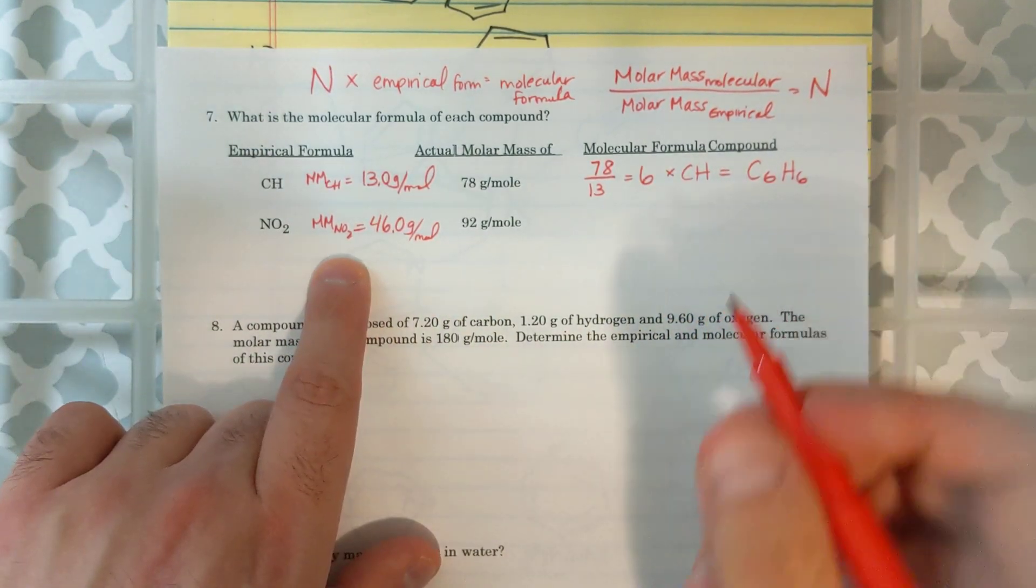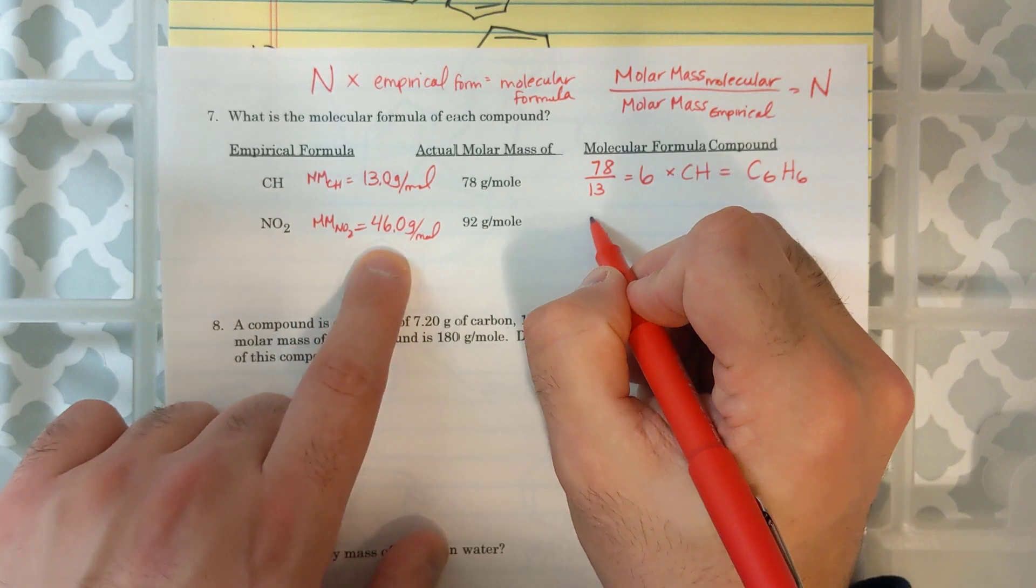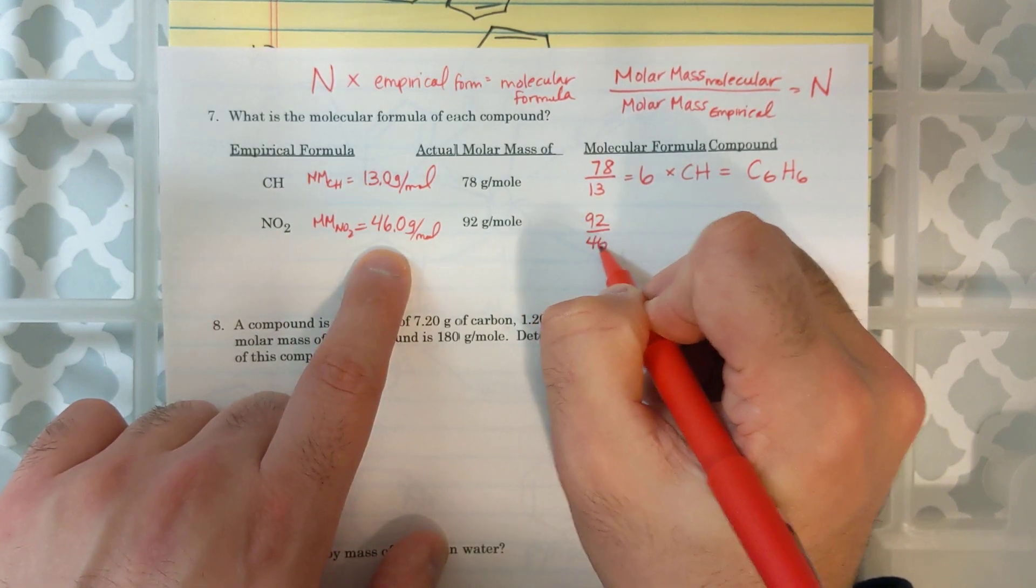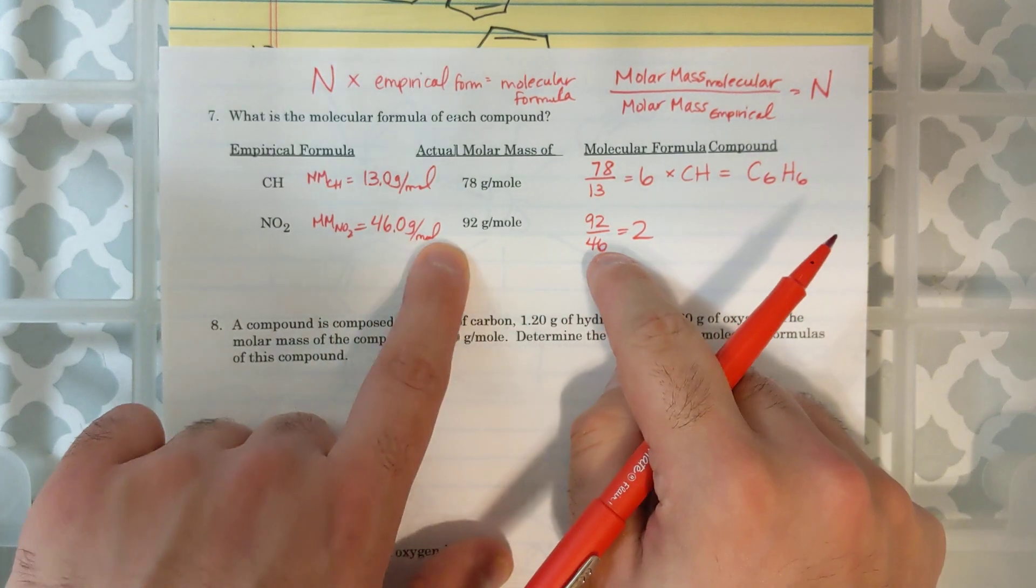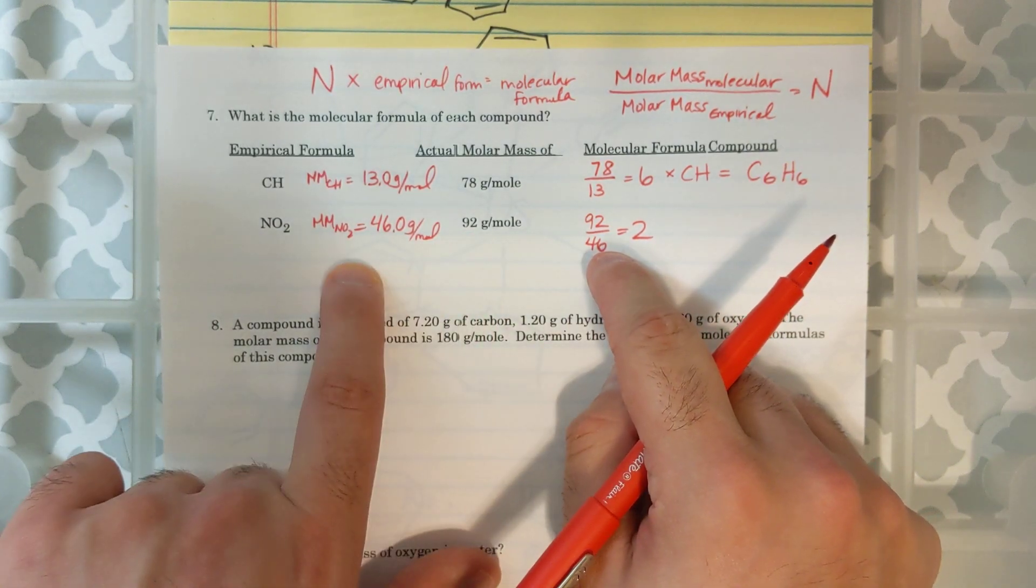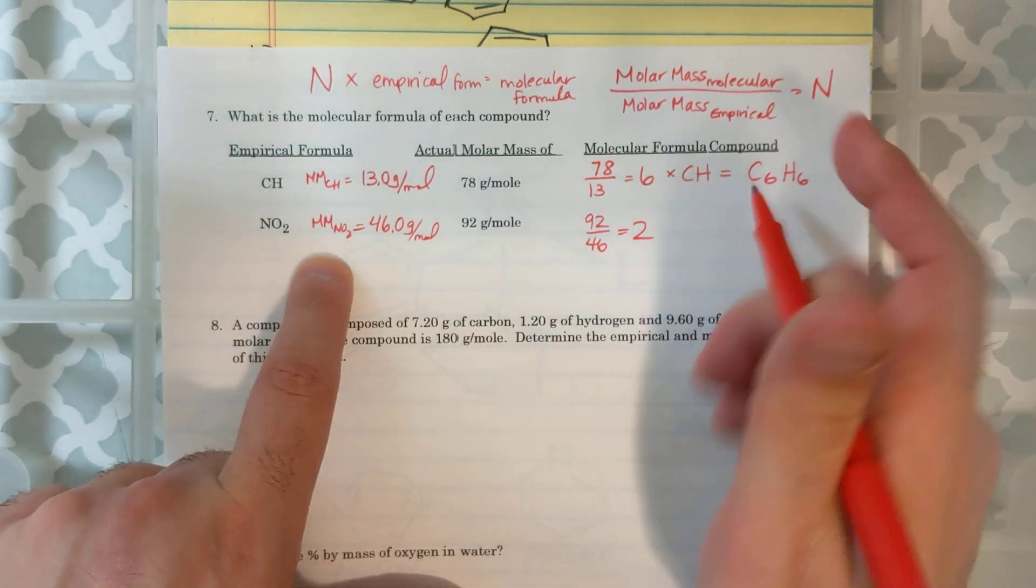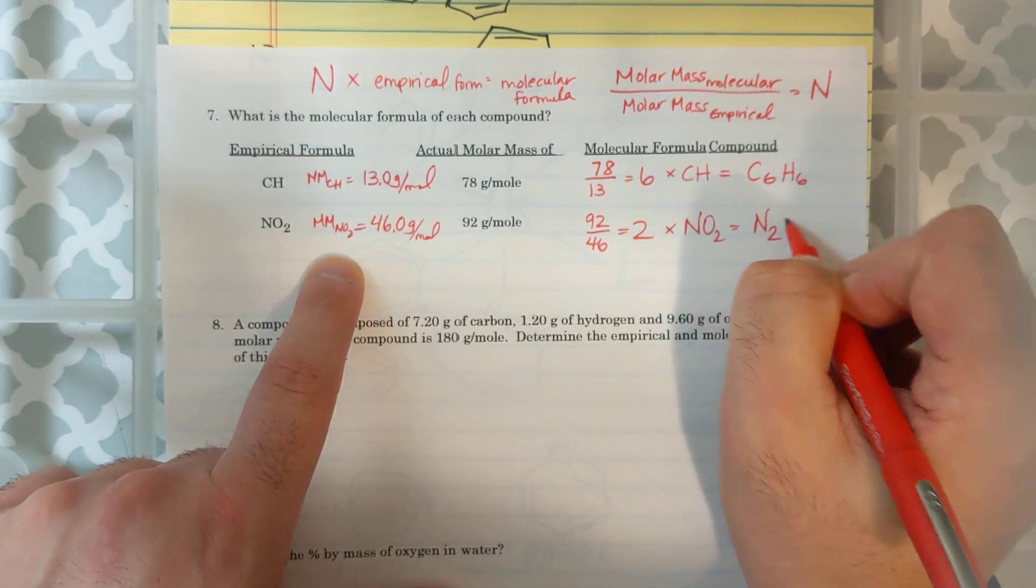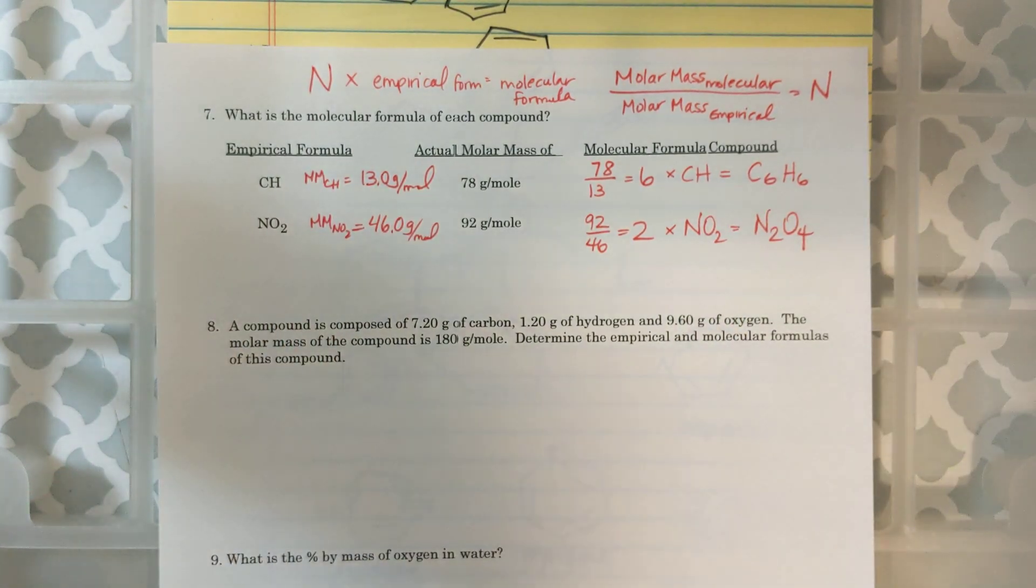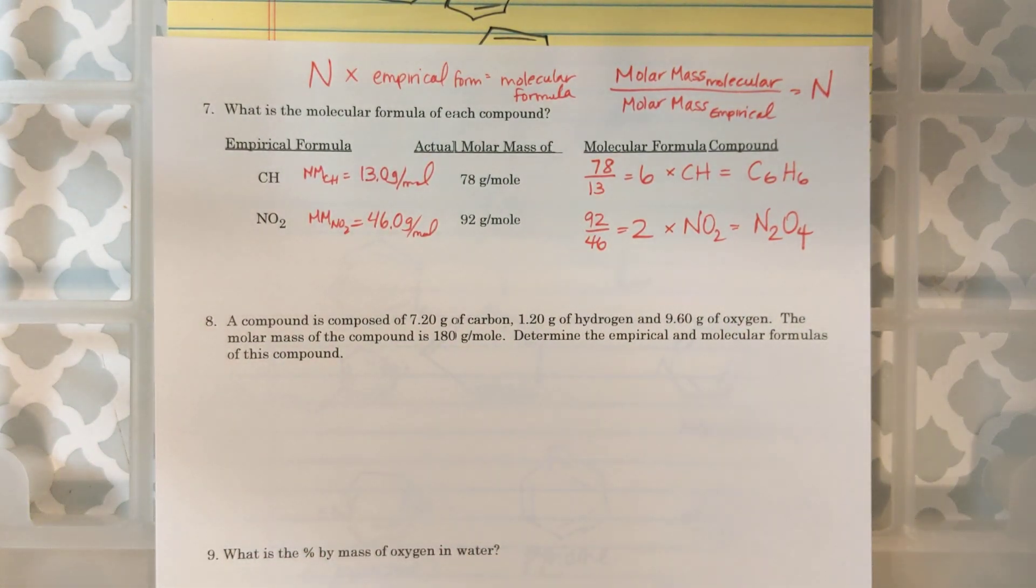And then, same thing with NO2. If I put 92 over 46, I get 2. That means that my molar mass of the molecular formula is twice as large as the empirical formula. So, I need to multiply this empirical formula by 2. And I get N2O4. And that is how you answer question number 7.